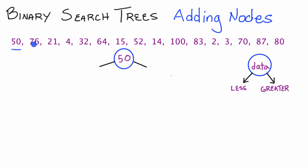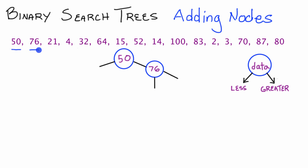Now when we add the number 76, we start at the top, look at 50, and realize that 76 is greater than 50. So we go to the right-hand side and add a node for 76. We give this node a right pointer and a left pointer. So now we've taken care of the number 76.